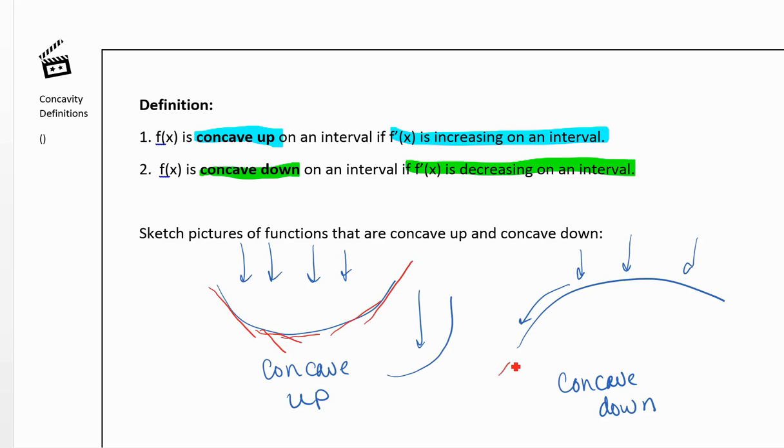Here, we would have a positive slope, less positive, less positive, zero, and then negative. So the slope would be decreasing.